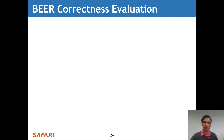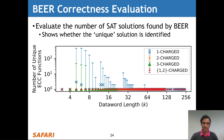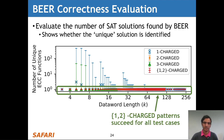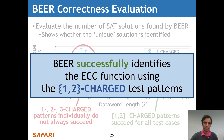Let's take a look at our correctness evaluation for BEER. We evaluate the number of unique SAT solutions that BEER finds, showing whether the unique ground truth solution is identified. The x-axis shows the ECC code data word length, and the y-axis shows the number of unique ECC functions identified, with each data point showing minimum, median, and maximum values. The combined 1 and 2 charge test patterns always find a single unique solution for all test cases. Individual patterns sometimes find more than one solution. Our takeaway is that BEER successfully identifies the ECC function using the combined 1 and 2 charge test patterns for all test cases.